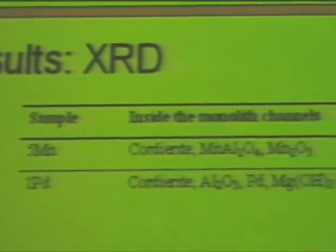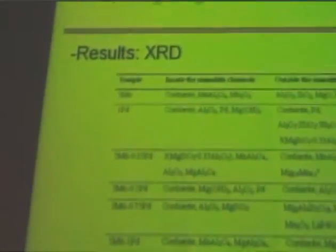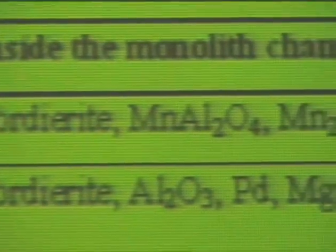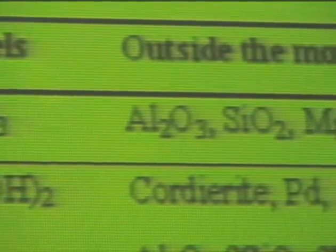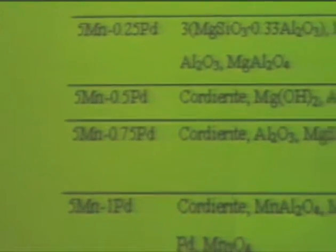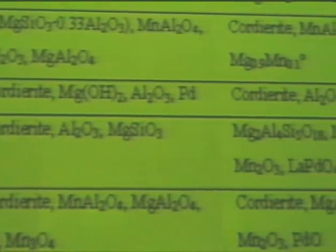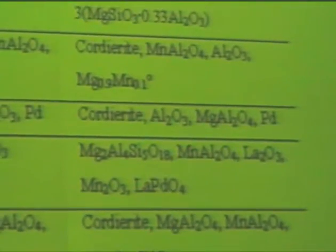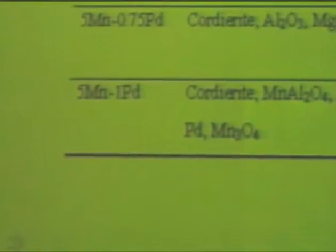In this slide, we summarize the results of X-ray diffraction. For the manganese phase, for all the catalysts, it is observed the interaction between the manganese with the support of gamma-alumina. For the bimetallic catalysts with higher palladium content and lower metallic manganese, it is also observed the presence of different manganese oxides.